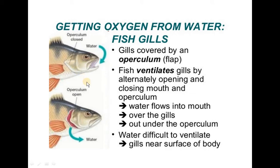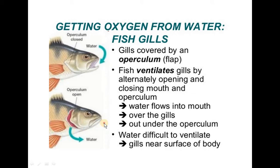Water enters the mouth into the fish's body and is released from the operculum. Now, looking at the gill structure in detail, there are 3 major portions. One is the gill filaments, which is the region where gaseous exchange occurs in the fish's body.